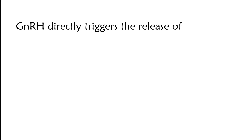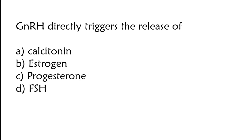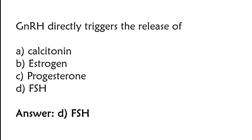GnRH directly triggers the release of: calcitonin, estrogen, progesterone, or FSH. The correct answer is option D. GnRH directly triggers the release of FSH.